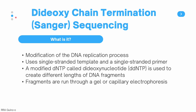The next type of direct sequencing is called dideoxy chain termination or Sanger sequencing. This is a modification of the DNA replication process. It uses single-stranded template DNA and a single-stranded primer. A modified dNTP called a dideoxynucleotide (ddNTP) is used to create different lengths of DNA fragments, and the fragments are run through a gel or capillary electrophoresis to determine the sequence.